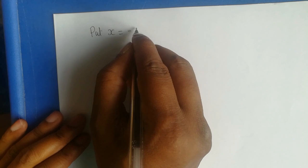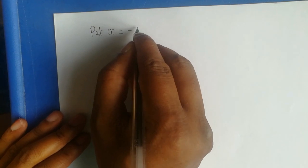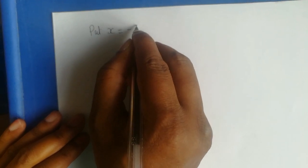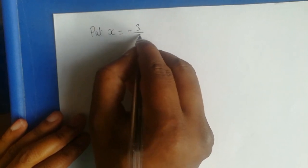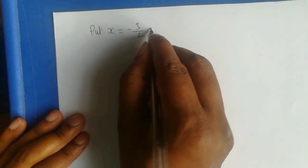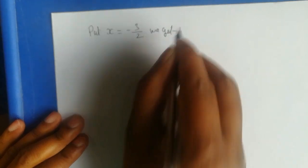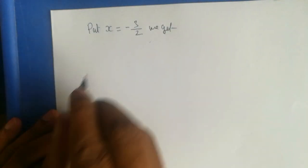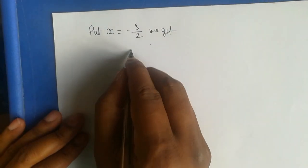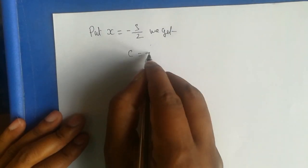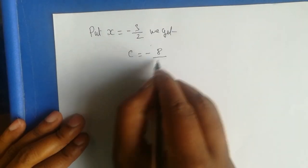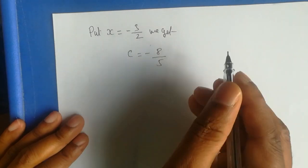By substituting x equal to minus 3 by 2, we get C equal to minus 8 by 5.